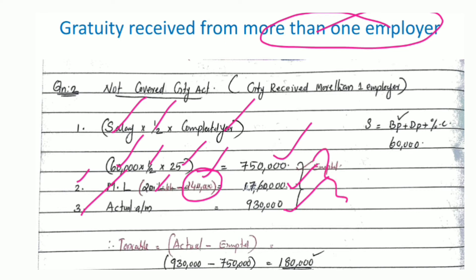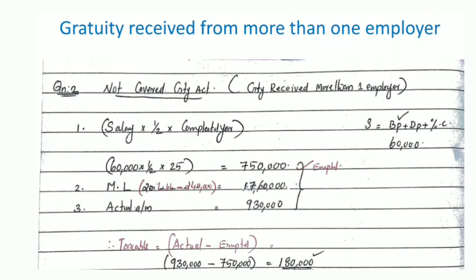The three figures are: actual gratuity received, the calculated amount, and the ceiling limit. The least amount — Rs. 7,75,000 — is the exempted amount.